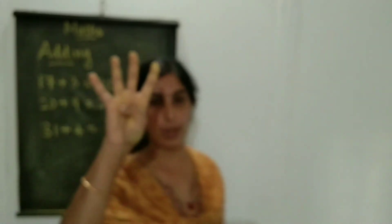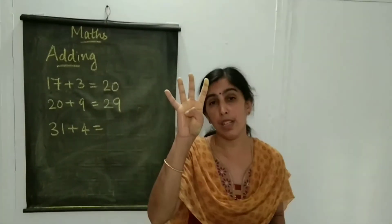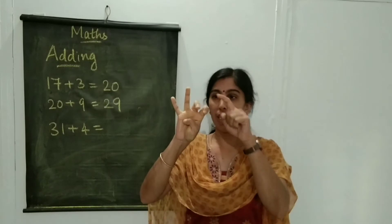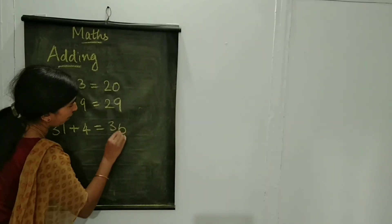Like that, you want to count 31 plus 4. So, 31 you keep it there, just take 4 fingers. 4 fingers. Or you can count aloud also. 31, 32, 33, 34, 35. So, the answer is 35.